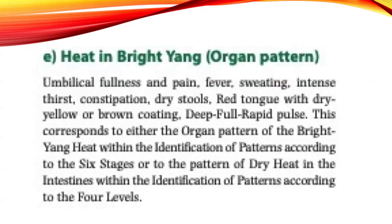Heat in Bright Yang Organ Pattern: Umbilical fullness and pain, fever, sweating, intense thirst, constipation, dry stool, red tongue with dry yellow or brown coating, deep full rapid pulse. This corresponds to either the organ patterns of the Bright Yang within the identification of patterns according to the six stages, or the pattern of dry heat in the intestines within the identification of patterns according to the four levels.